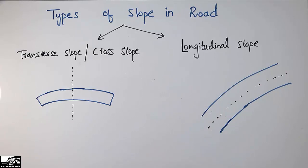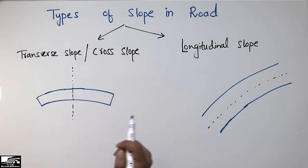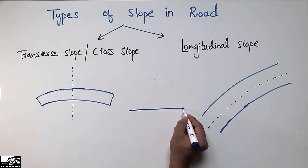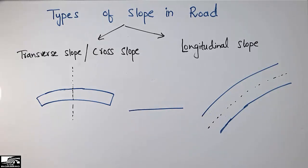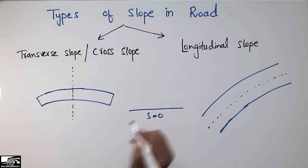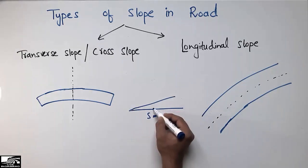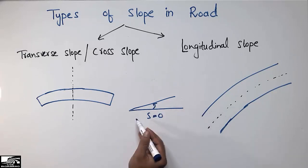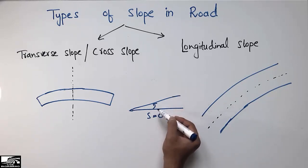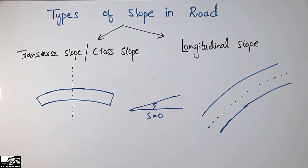First, to define the slope: the slope is the inclination of the road surface from the ground. For example, if this is a horizontal road without any inclination from the ground, we say the slope is equal to zero. But if the road has some inclination from the ground, it makes an angle with the horizontal, so we say this road has some slope.